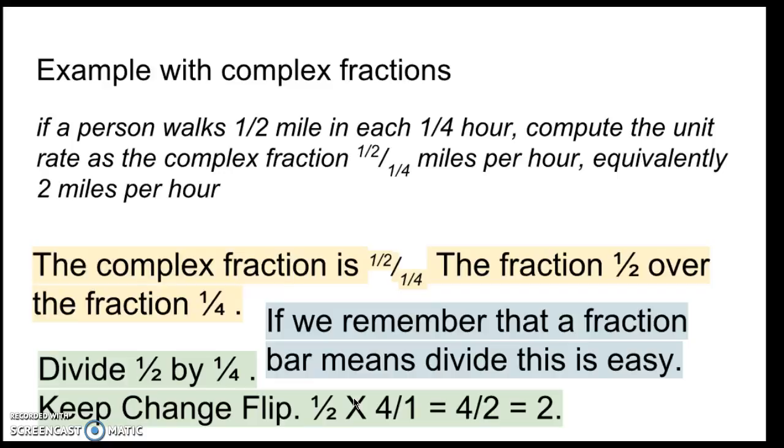Now, we have 1 half divided by 1 fourth. So, I just keep change and flip. I keep the 1 half, multiply by 4 over 1. And 1 times 4 is 4, 2 times 1 is 2. So, I have 4 over 2, and 4 over 2 reduces to 2.